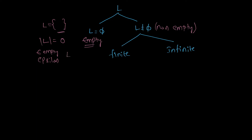Such a language is called an empty language. We can denote it as φ (phi), so L equal to φ is an empty language. On the other hand, a non-empty language can be defined as a language that contains at least one string. So the number of strings in a non-empty language is at least one.